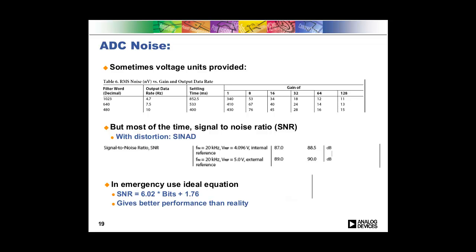In the emergency, you can use the little equation that probably a lot of folks know, which is that SNR equals 6 times the bits plus 1.76. Now, remember that this gives you your ideal performance of an ADC, not the real performance. So the real performance of your ADC will be a little worse than what this equation tells you.